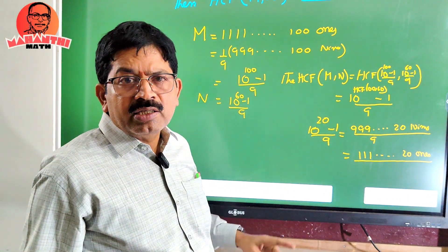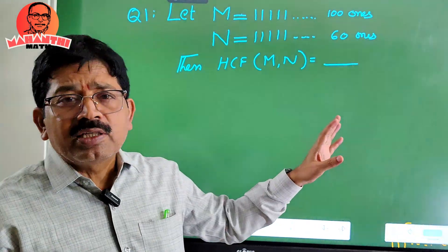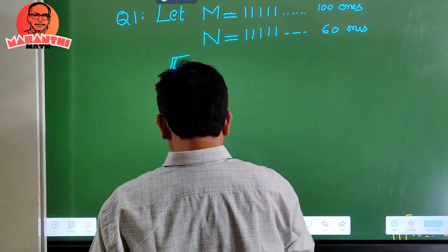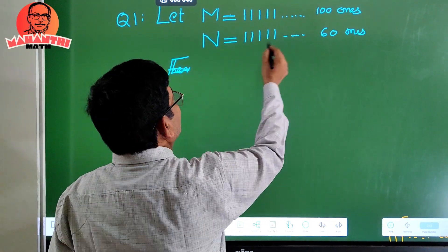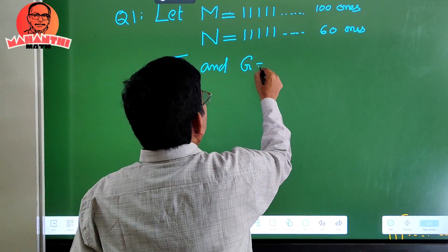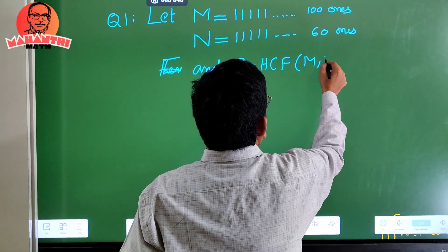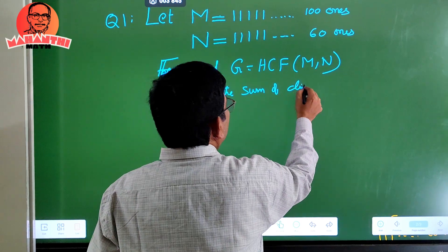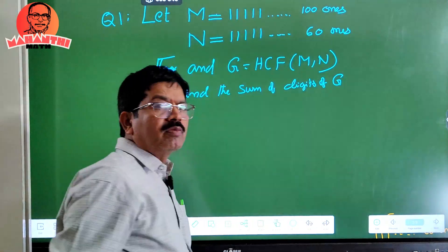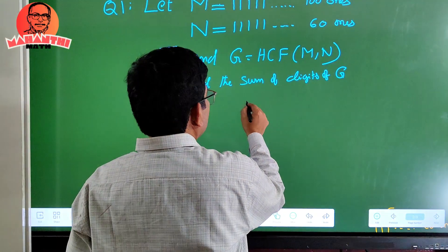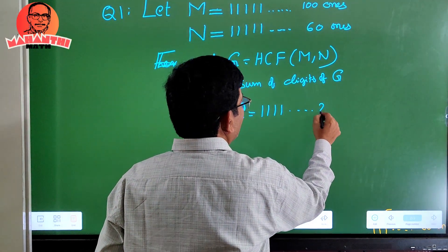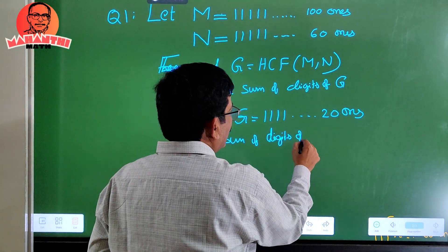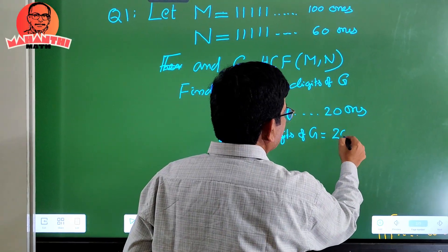This concept is very, very important and the question is very interesting. In IOCM format, they would define m, n as given, let G equal HCF(m, n), and ask for the sum of digits of G. We already solved this: G is 111...1 with 20 ones, so the sum of digits equals 1 added 20 times, which gives 20.